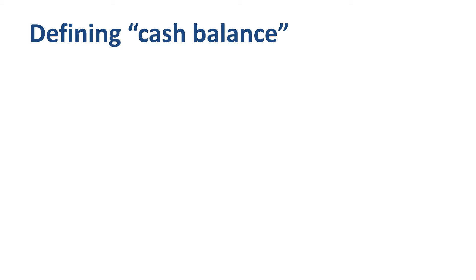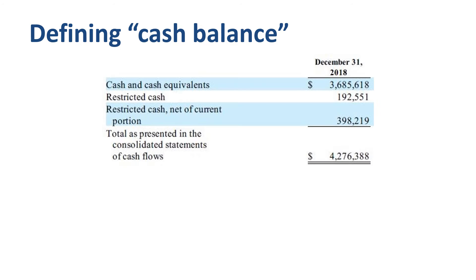Let's first define the term cash balance before we go into cash flow. In Tesla's 2018 financial statements, cash balance is the sum of cash, cash equivalents, and restricted cash. The total of these items was $4.3 billion per December 31st, 2018.